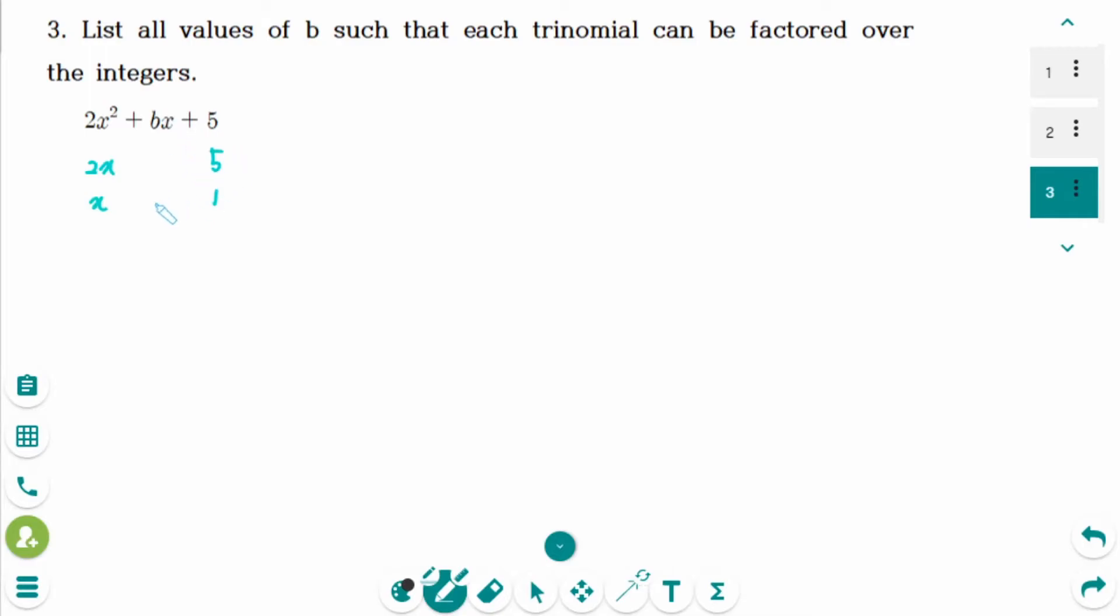Then cross multiply. Makes 5x. This one is 2x. Combined together makes 7x. So b can be 7.